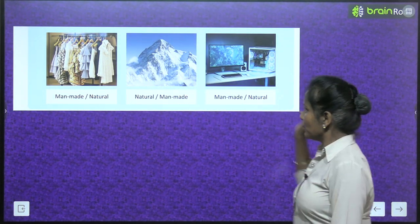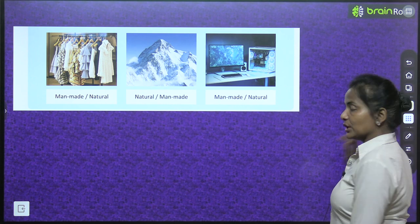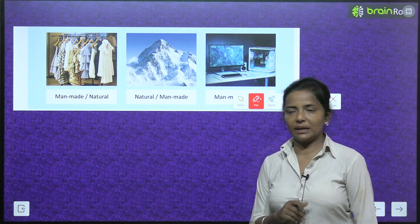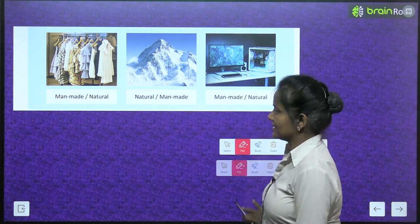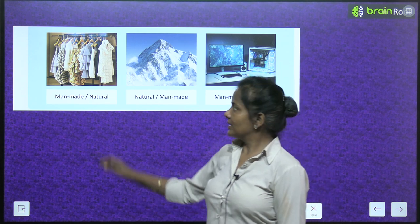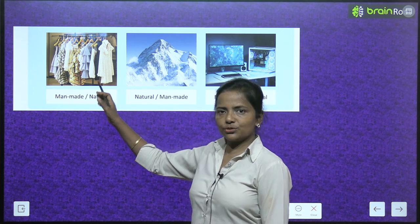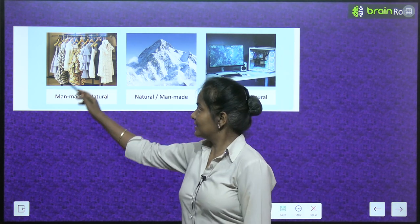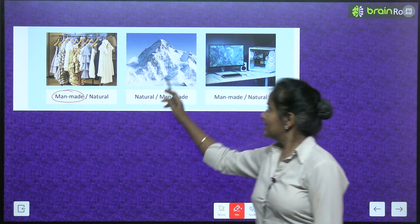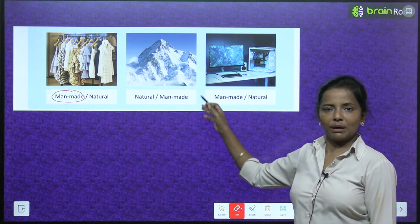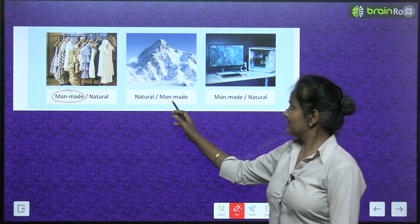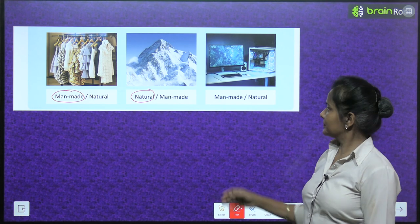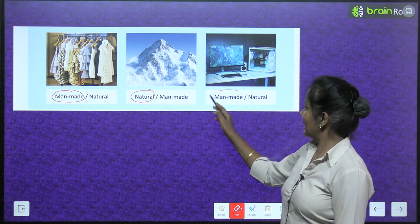Three more pictures: identify whether each is natural or man-made. These clothes — nature did not give them to us, they are man-made. Mountains — these are natural. Computers — man-made.